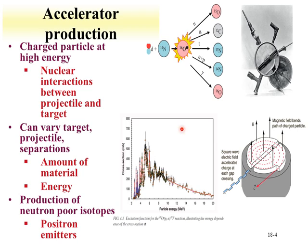Shown here is the very first cyclotron produced by Lawrence—very small and handheld. This shows a typical route of how a cyclotron operates: a charged particle is introduced into the center, magnetic field sectors vary, and they accelerate the particle. By the time it hits a certain known distance, it must be traveling at a certain energy based upon its mass and charge.